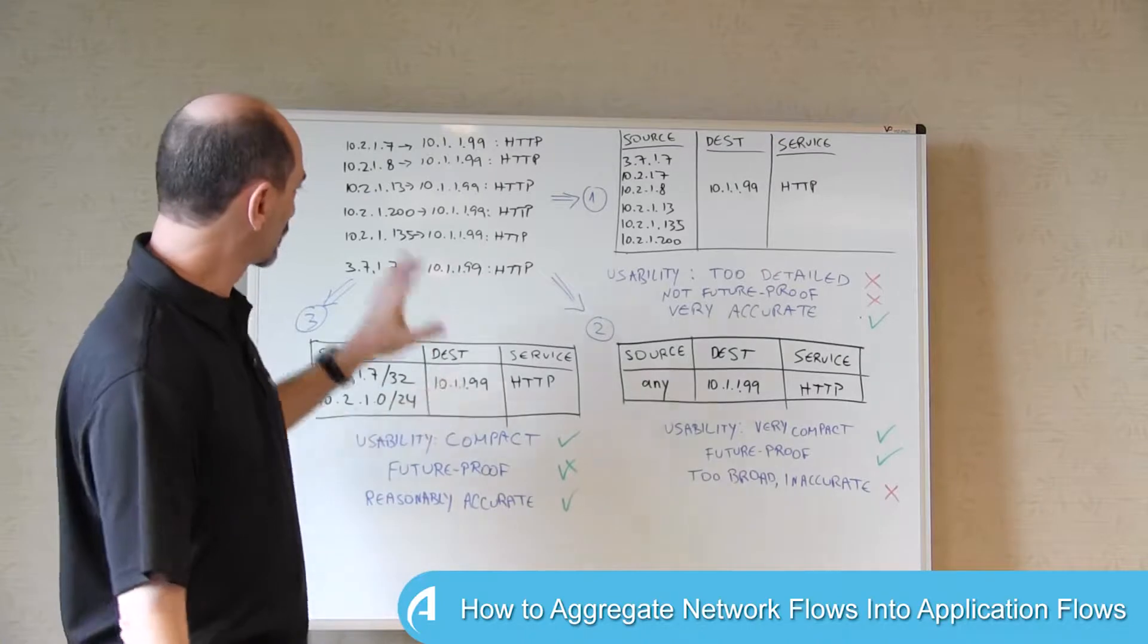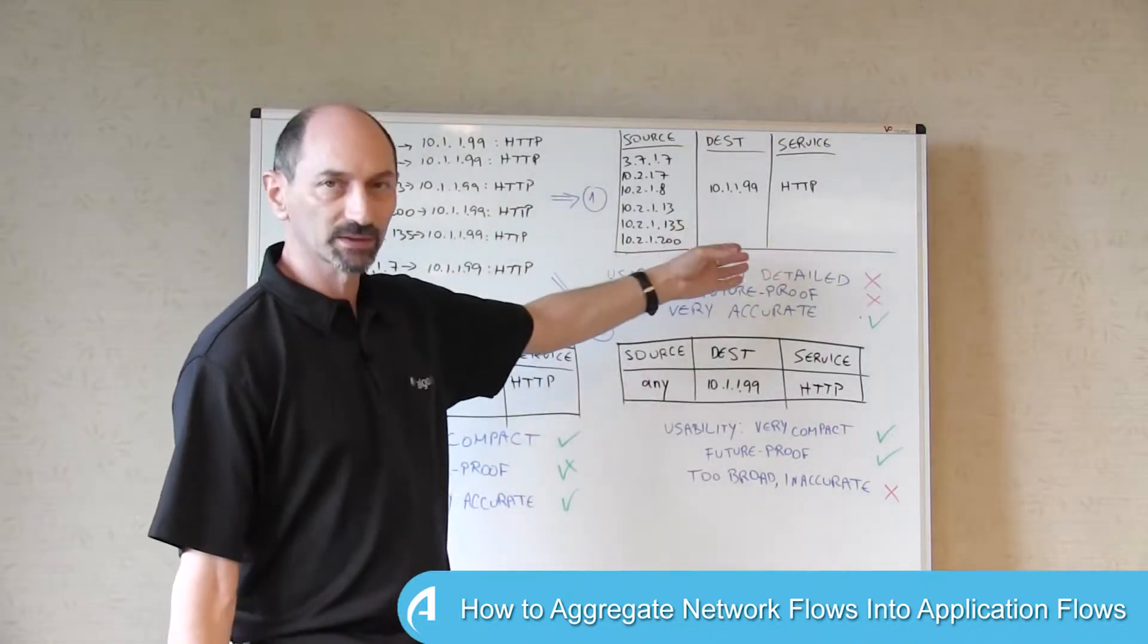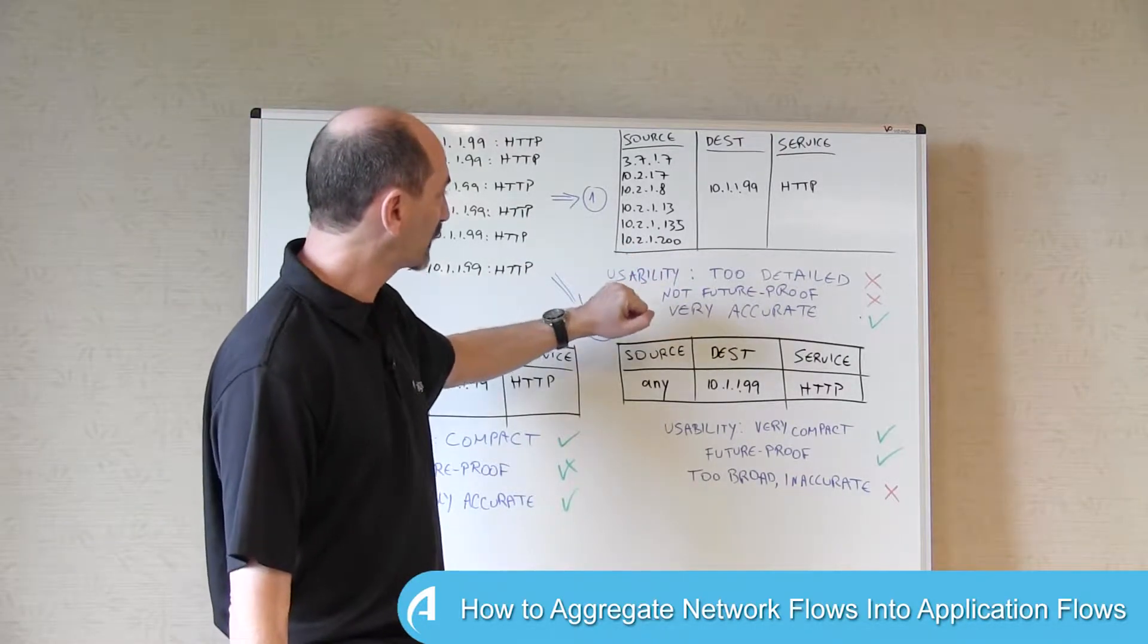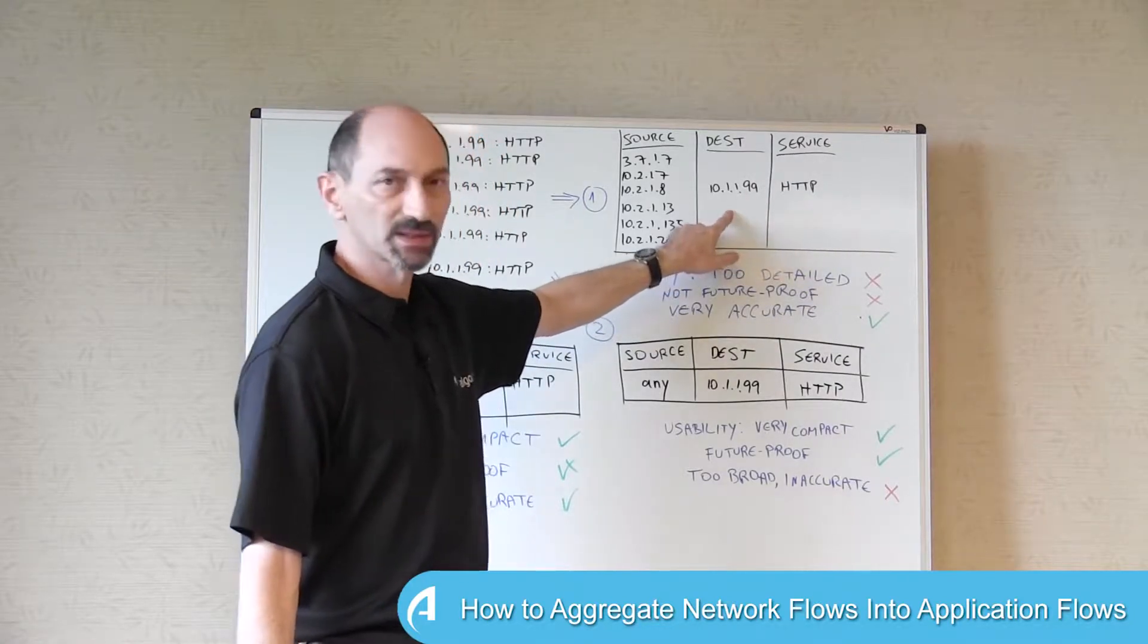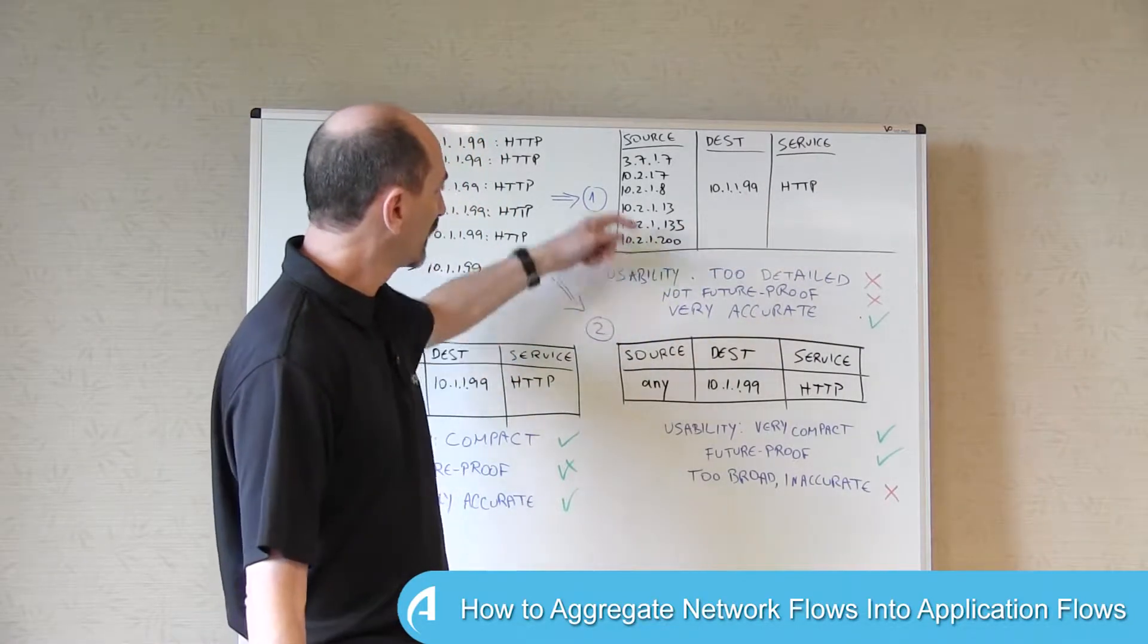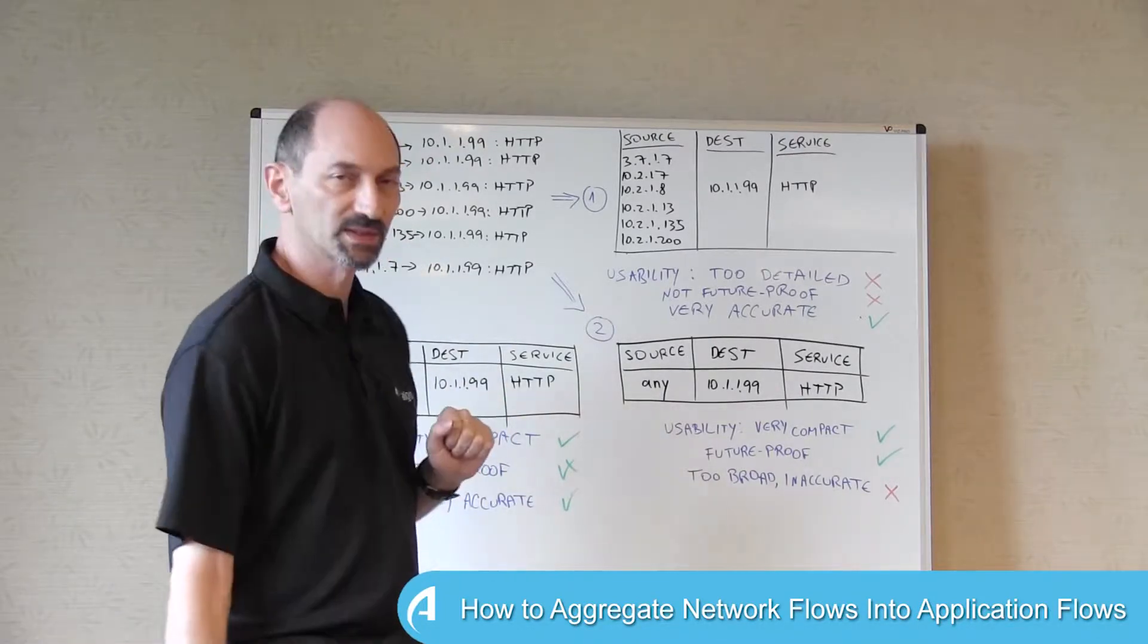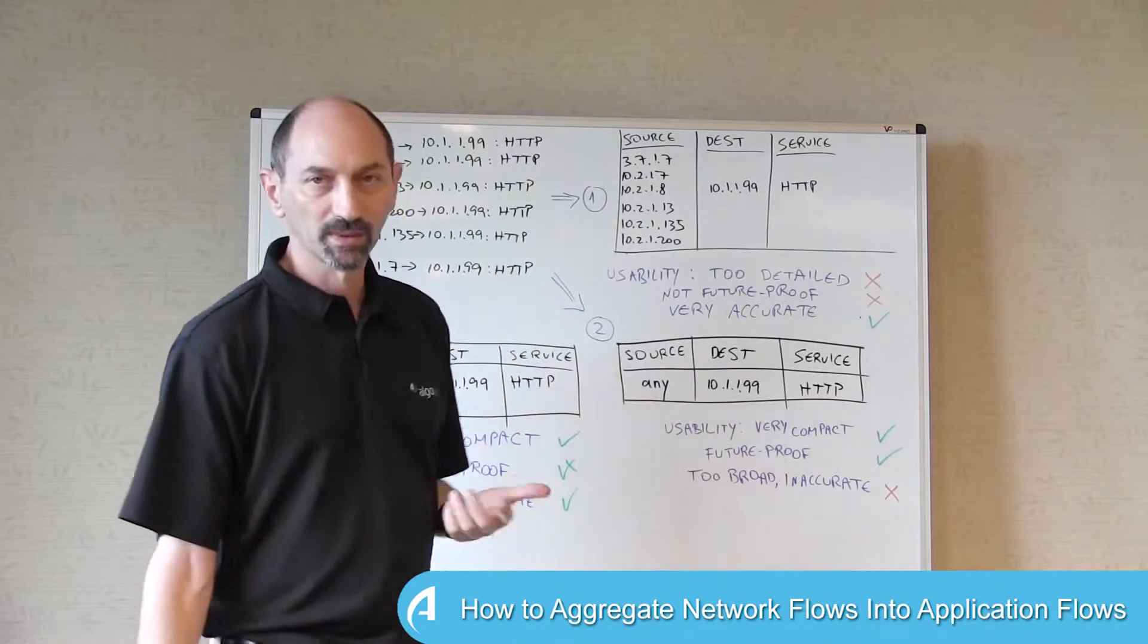So the easiest thing to do is to take this representation and convert it to something that looks like what we have here in option number one at the top, where the service is listed once and the destination is listed once, just the IP address. And in the source, we see the list of all the IP addresses that were discovered in the NetFlow, sorted by IP address.